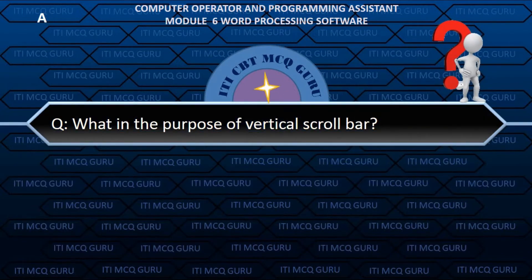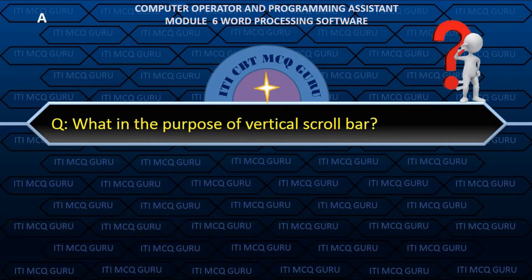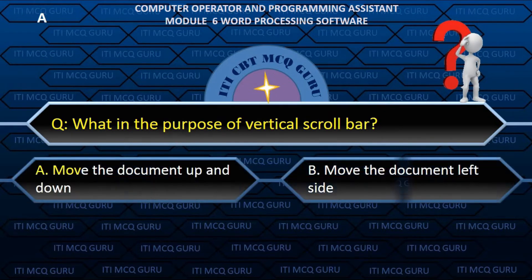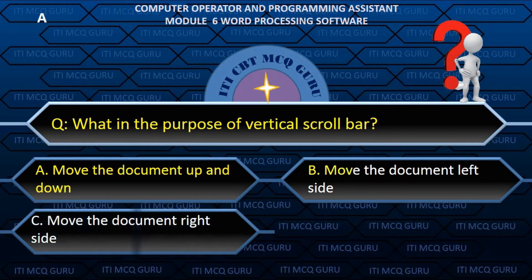What is the purpose of the vertical scroll bar? A. Move the document up and down.